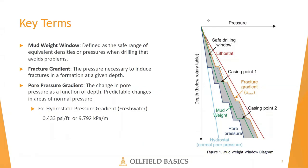The mud weight window has both an upper bound and a lower bound, which depend on wellbore mechanical stability as well as other requirements such as in-situ stresses and pore pressures. The upper bound is known as the fracture gradient, which is the pressure necessary to induce fractures in the formation at a given depth. The lower bound is referred to as the pore pressure gradient, which is the change in pore pressure as a function of depth.